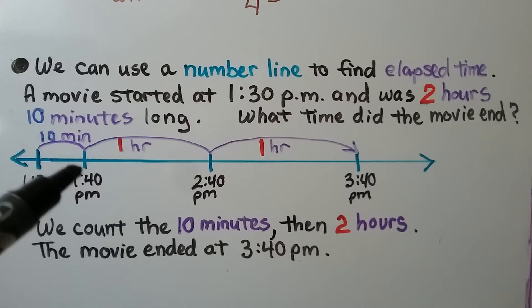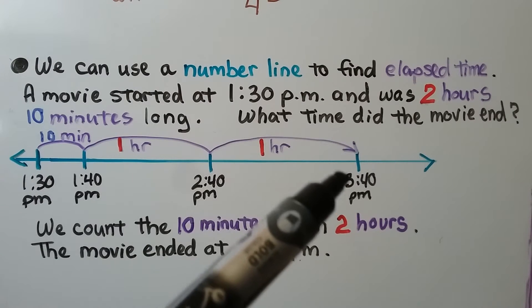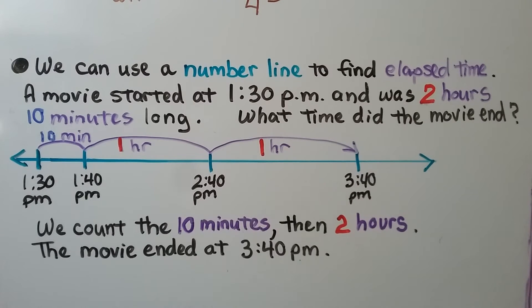Now we have to jump two hours. From 1:40 PM to 2:40 PM is one hour. Then to 3:40 PM is the second hour. We count the 10 minutes, then the two hours. So the movie ended at 3:40 PM.